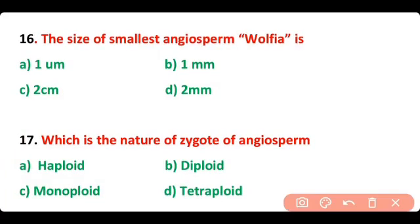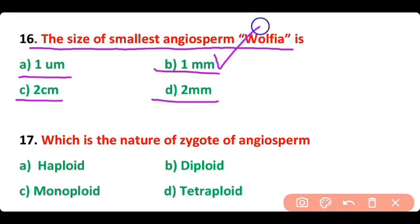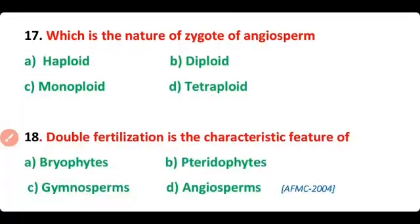Question 16. The size of the smallest angiosperm, Wolffia, is: 1 micrometer, 1 mm, 2 cm, or 2 mm? The correct answer is option B. The size of the smallest angiosperm, Wolffia, is 1 mm.